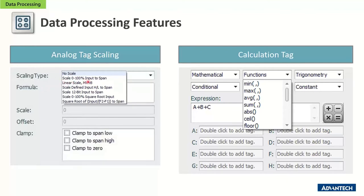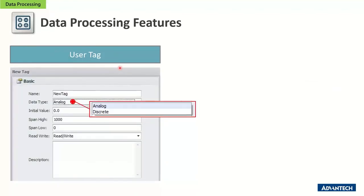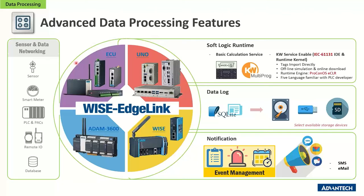The calculation tag lets you define formulas such as A + B + C, where A, B, and C can be temperature values from different sensors. You can use functions including min, max, average, sign, and conditional logic. User tags act as internal tags, mainly for set points — you can define initial analog or discrete values at device boot-up. For advanced data processing in H-Link, there's also soft logic, a logic program that you configure and run inside H-Link using the IEC 61131-3 standard with KW MultiProg software.